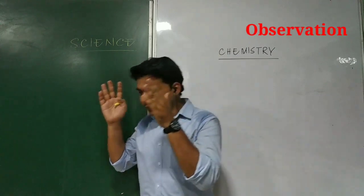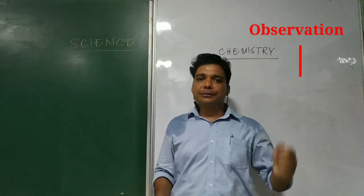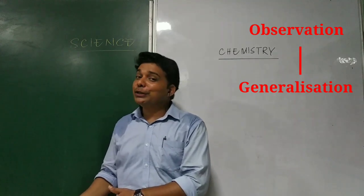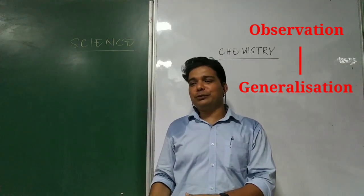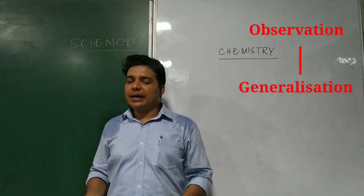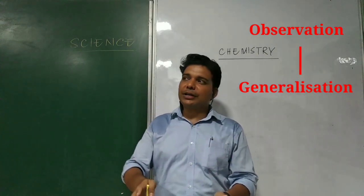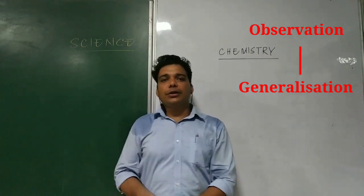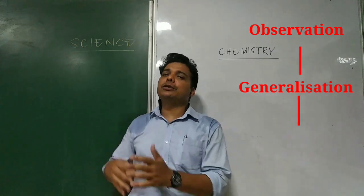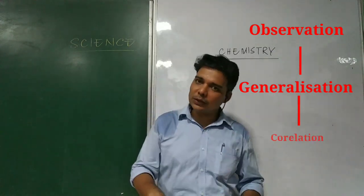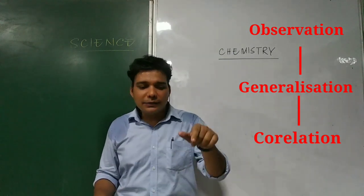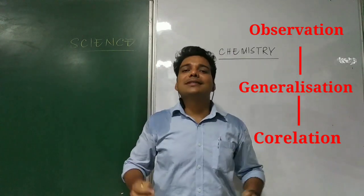First of all, a phenomenon is to be observed. Next, it is to be generalized. During the process of generalization, we will find certain principles, and those principles are to be applied to other related phenomena in order to explain them. If they are successful, then that is a fact, and this fact develops science.